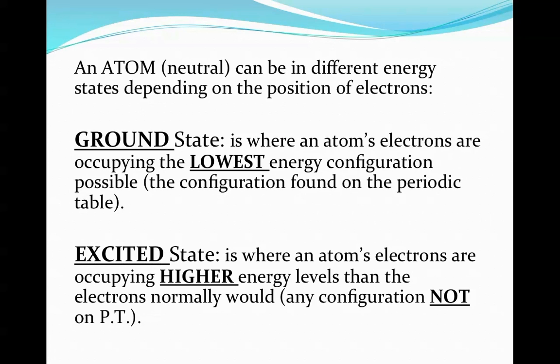So an atom, which remember atom means neutral, can be in different energy states depending on the positions of its electrons. The ground state means that all the atom's electrons are occupying the lowest energy configuration possible. This is the configuration that you find on the periodic table. The excited state, however, is when the atom's electrons are occupying higher energy levels. So those electrons have gained energy and jumped to a higher energy level.